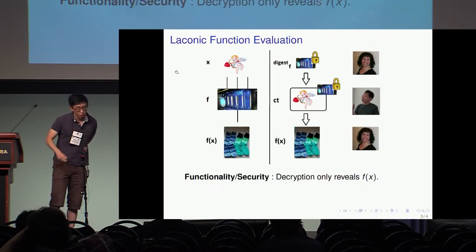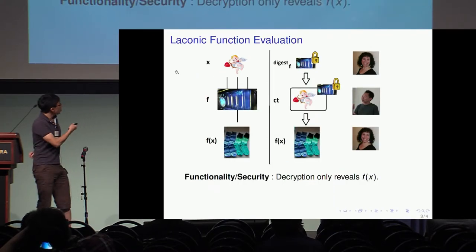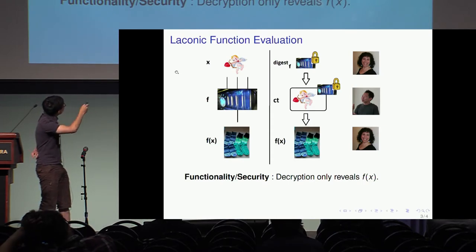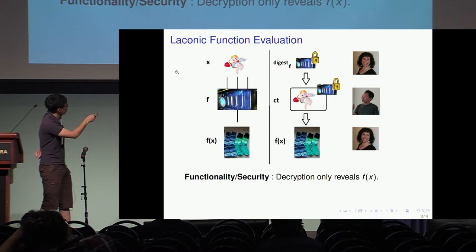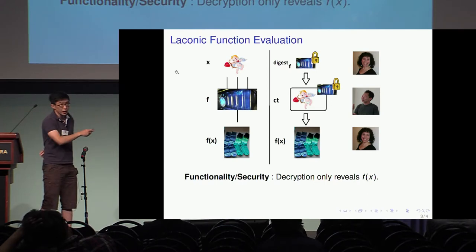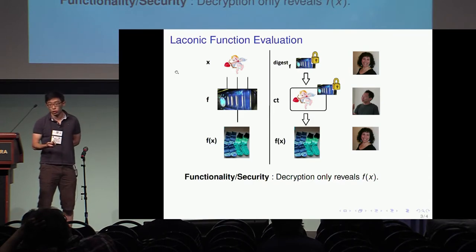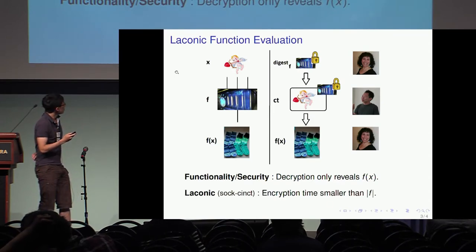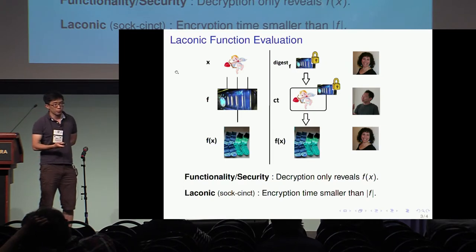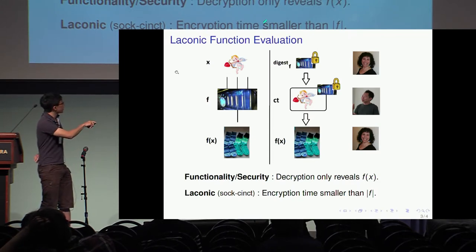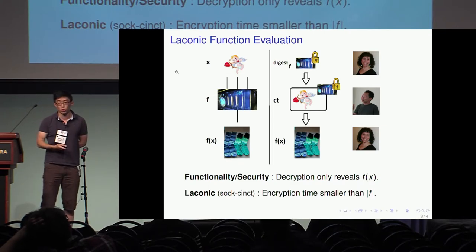More formally, we want our primitive to only let Tal learn f of x — the ciphertext means she only learns f of x and not the whole dating history. And for the laconic part, as our name suggests, we want the ciphertext to be succinct, in the sense that the encryption time should be smaller than running the IBM supercomputers. We are not at IBM.